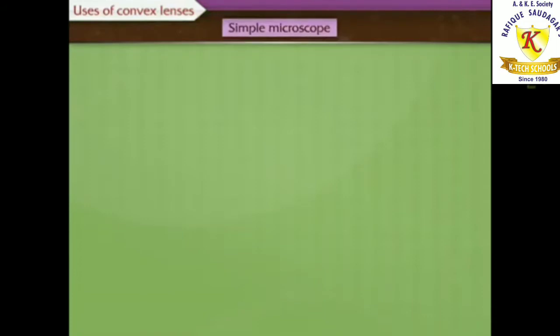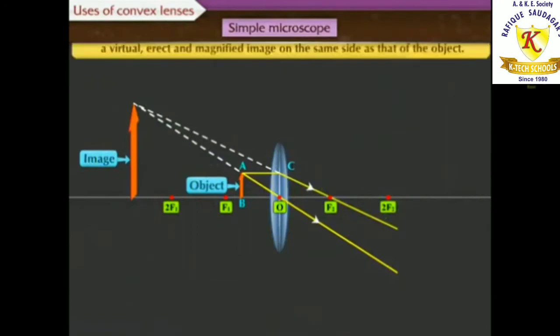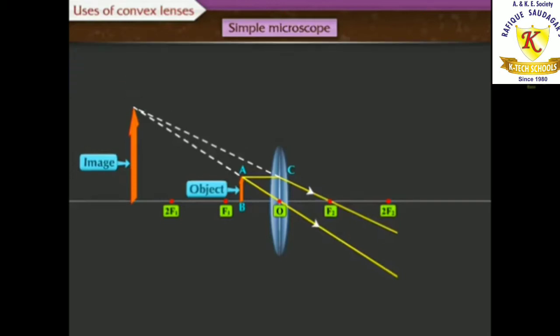A simple microscope: when the object is placed within the focal length of a convex lens, the lens produces a virtual, erect, and magnified image on the same side as that of the object.